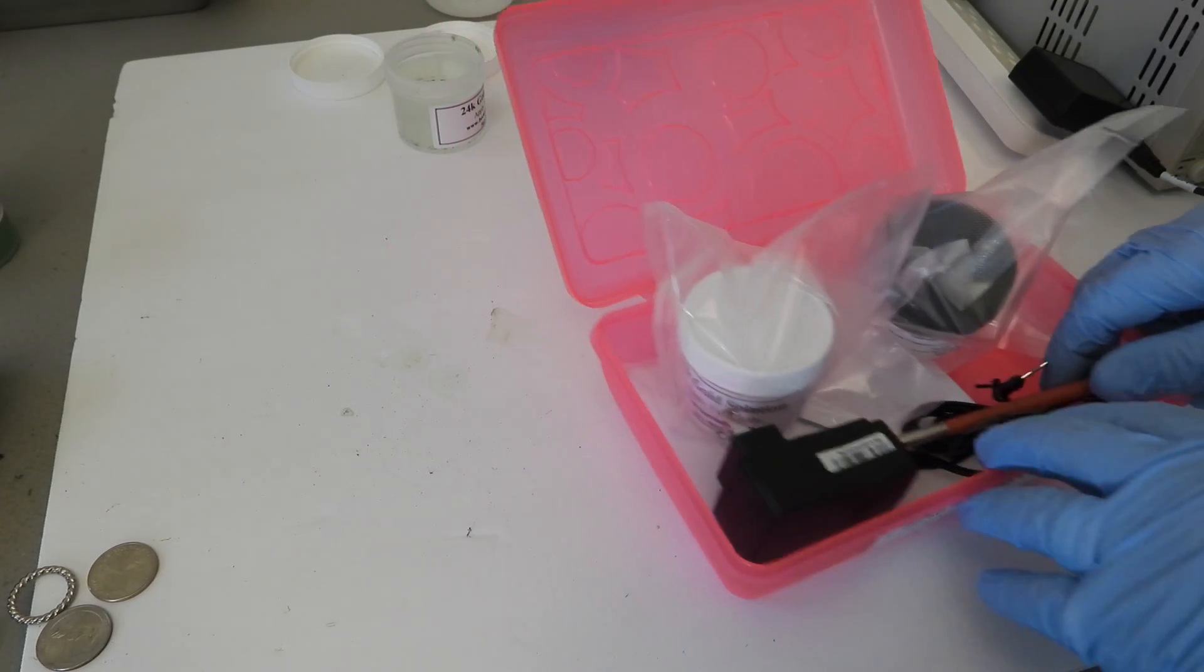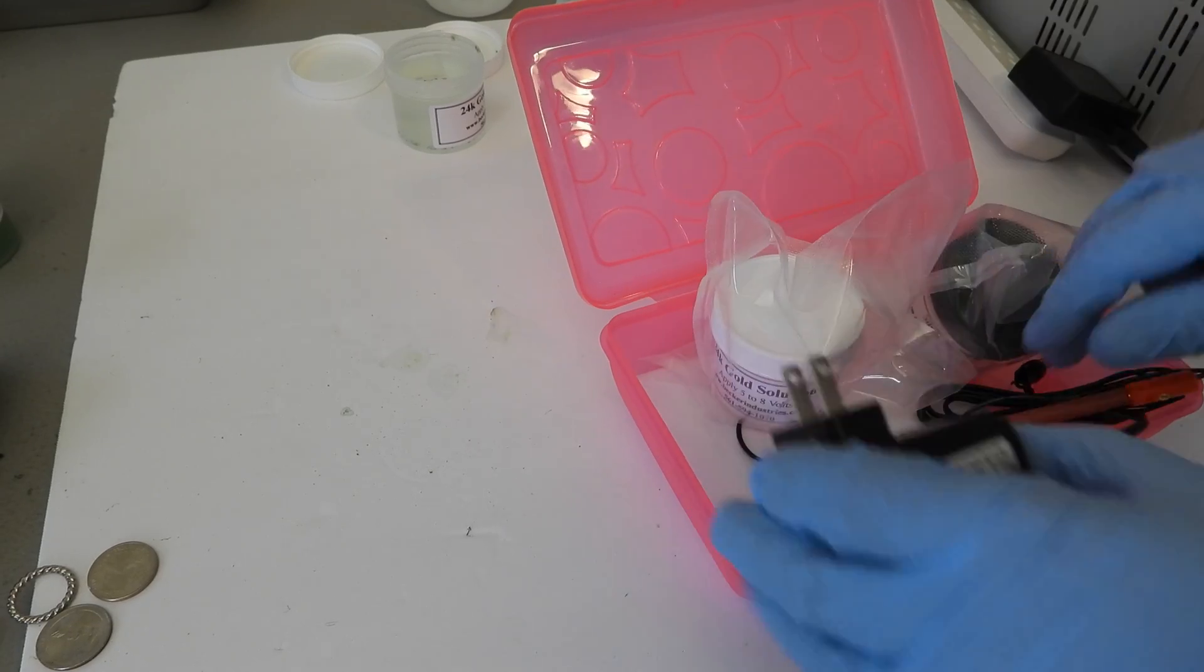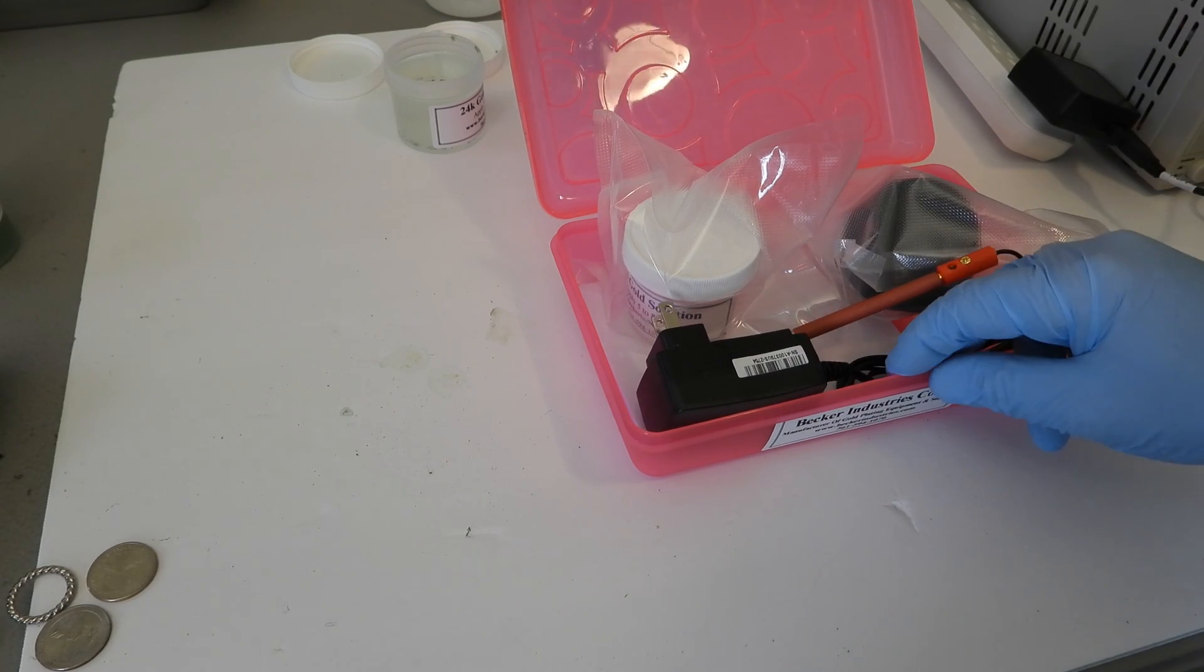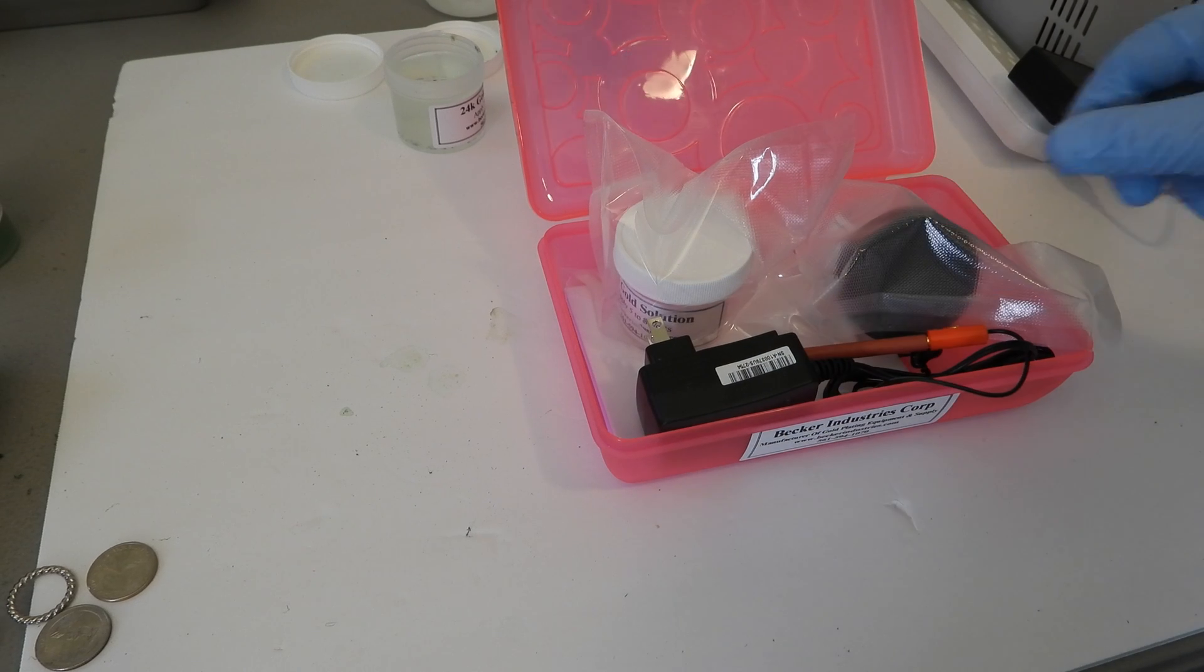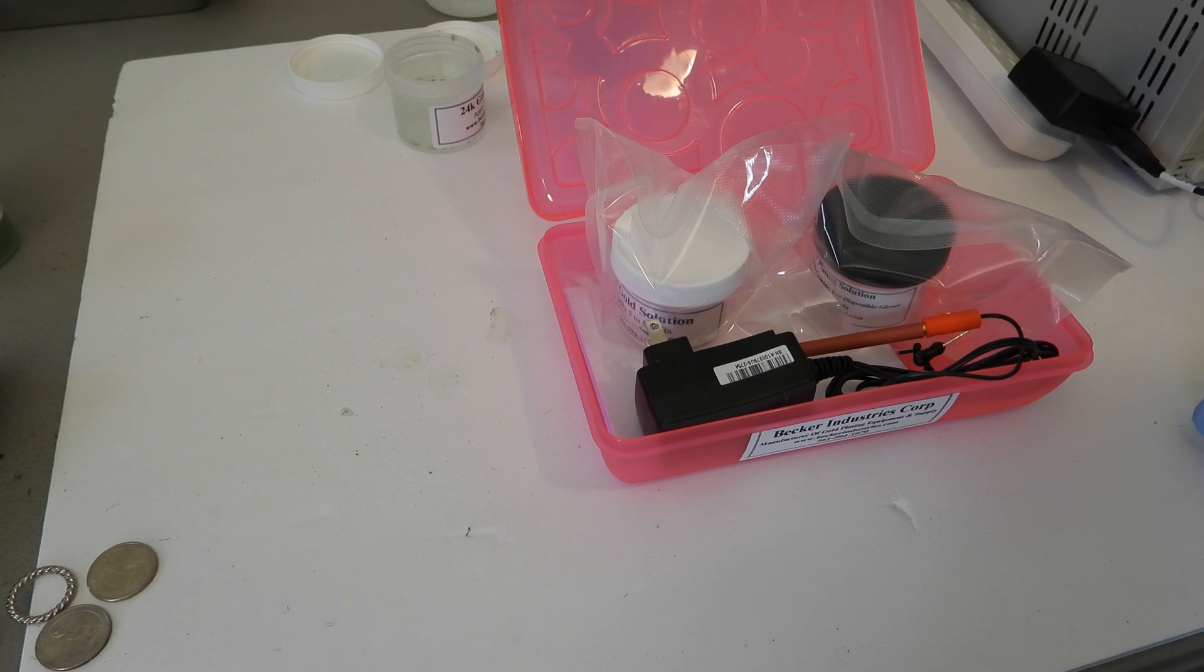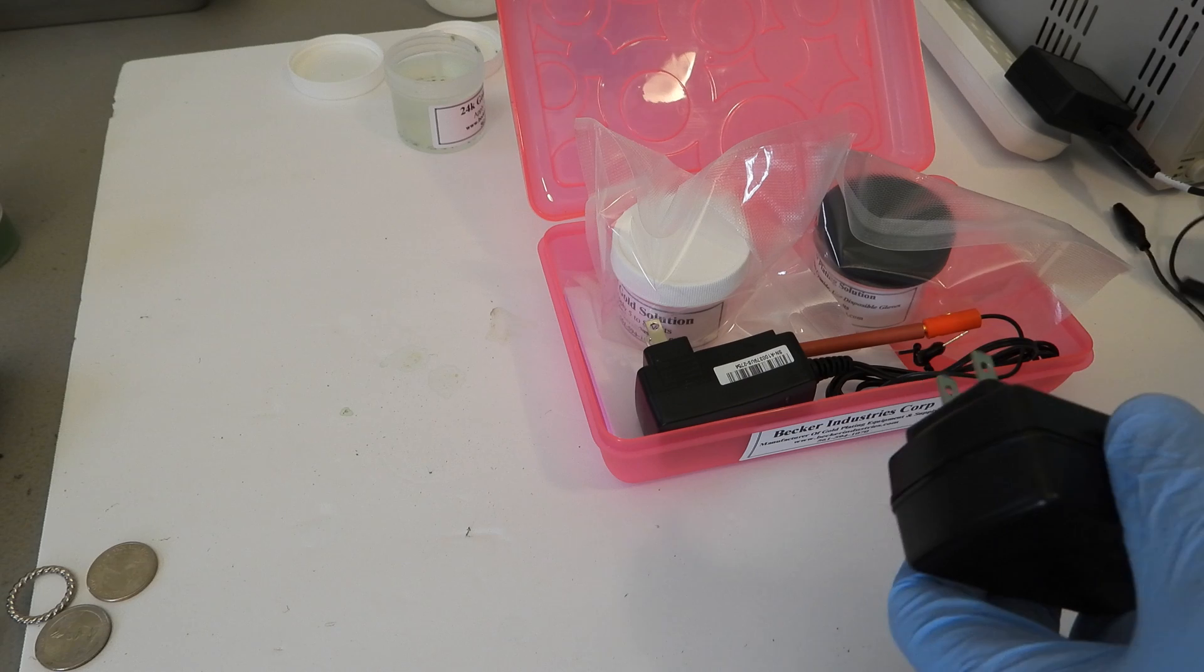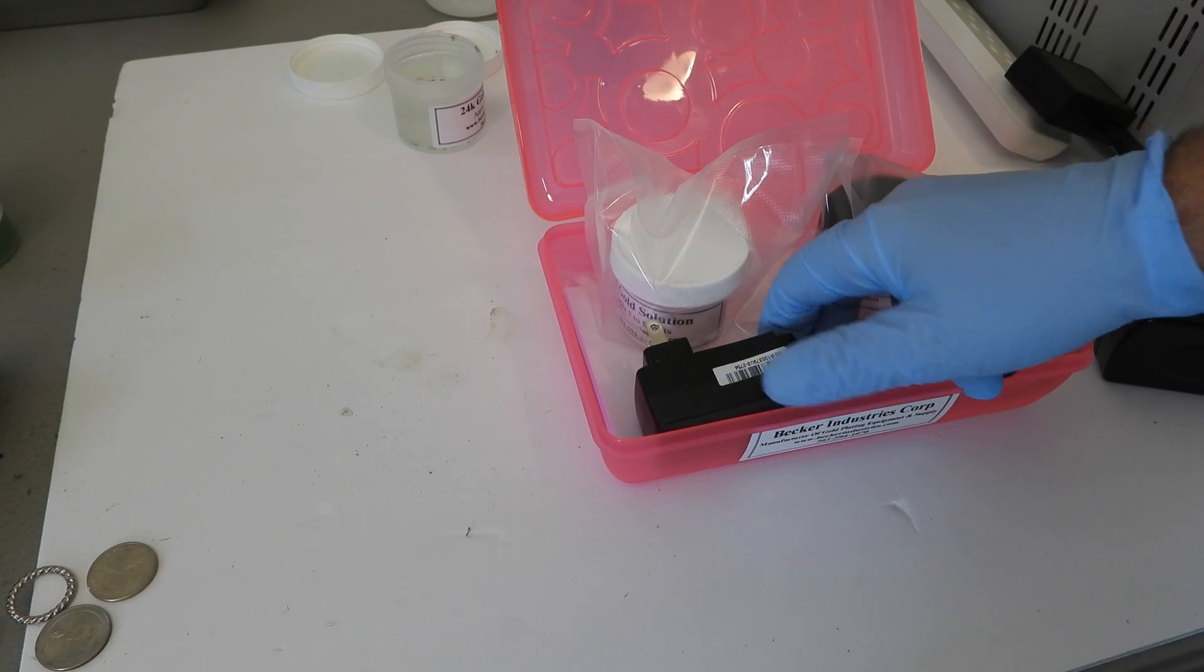Hi guys, today I'm gonna show you how this $89 mini plater works. I had another video for a $59 kit, this is the $89 kit. The difference between the $59 and $89 kit is that the $59 kit has a fixed power supply that you can just gold plate or silver plate. The $89 kit has an adjustable power supply.